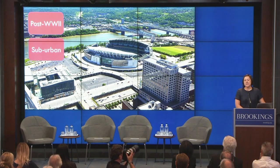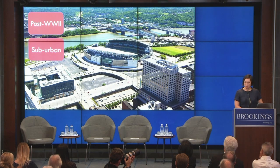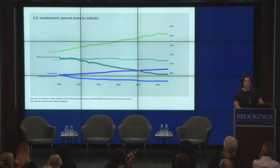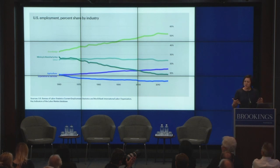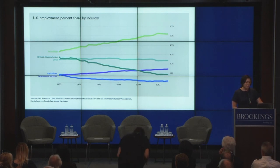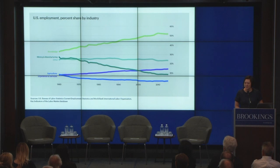We identify these two historic periods but also these two very different urban forms. After World War II and the post-war period, there were two other major developments in American real estate that have led to the present moment and to why catalytic development is emerging as a model now. The first is the decline of American manufacturing and the dramatic growth of the knowledge and service economies, and the second is the commodification of real estate.